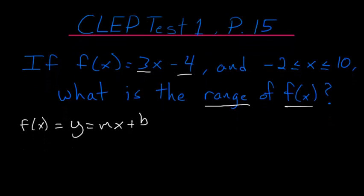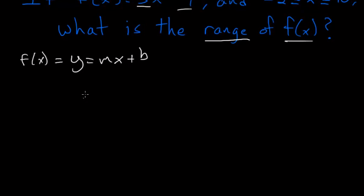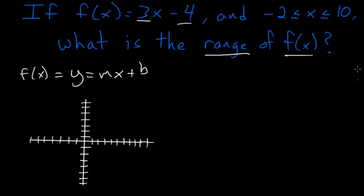So if we make a graph of this, we know that our function goes through the y-axis at -4. Its slope is 3, so that means it rises 3 and goes over 1. It's a line, so you can just connect these two points.